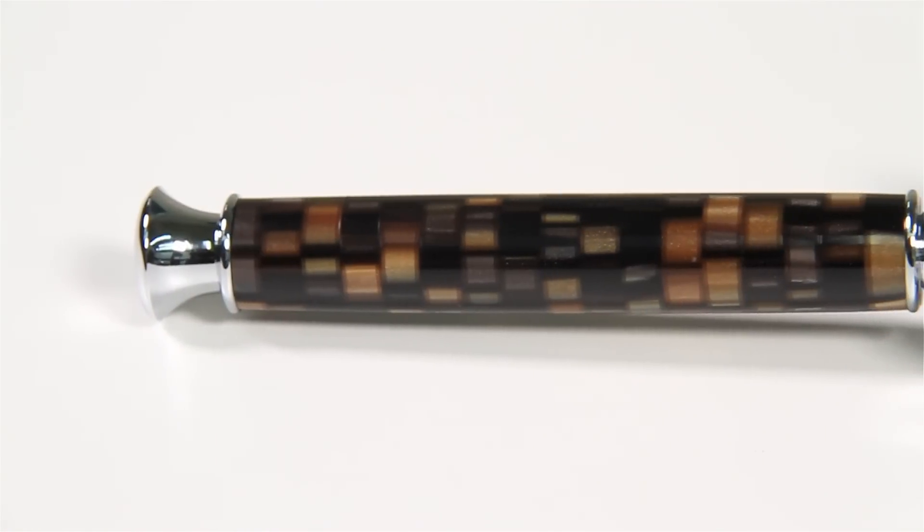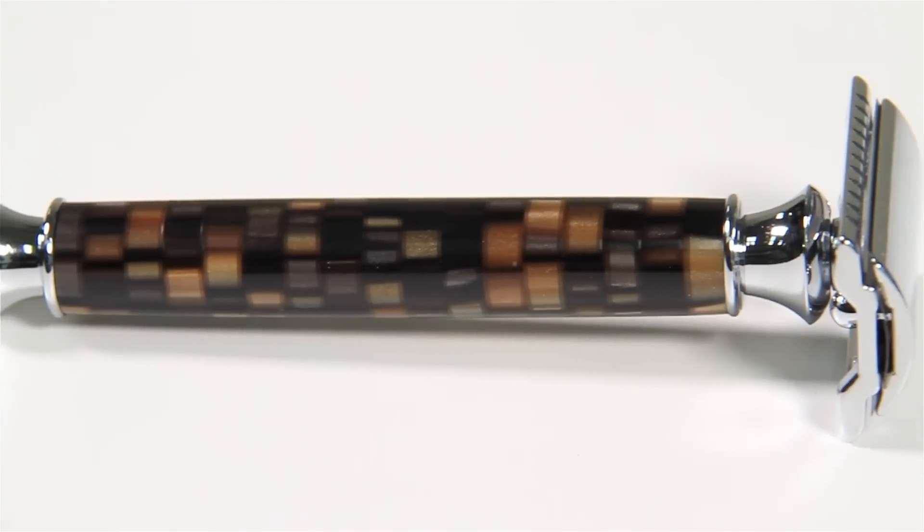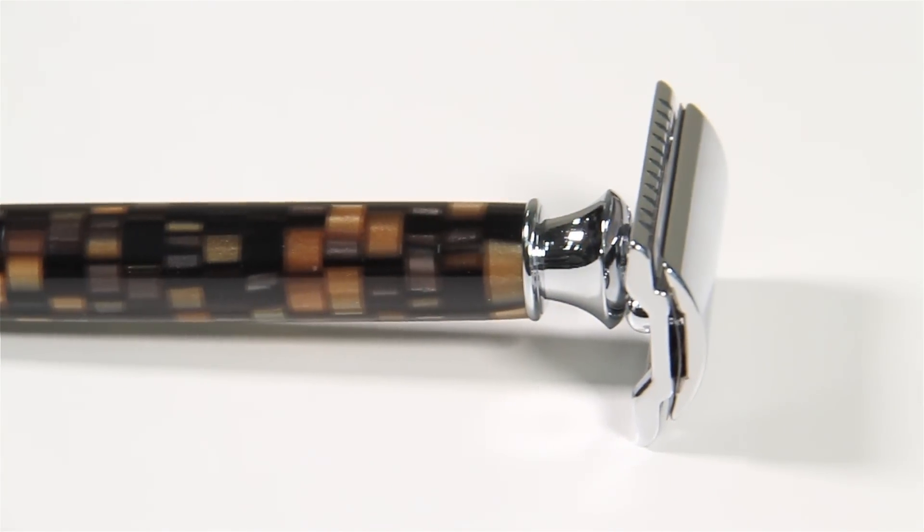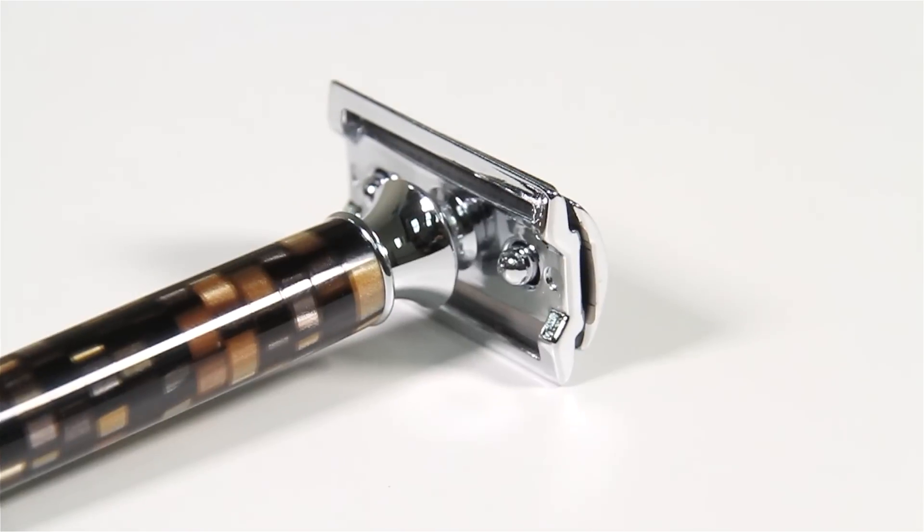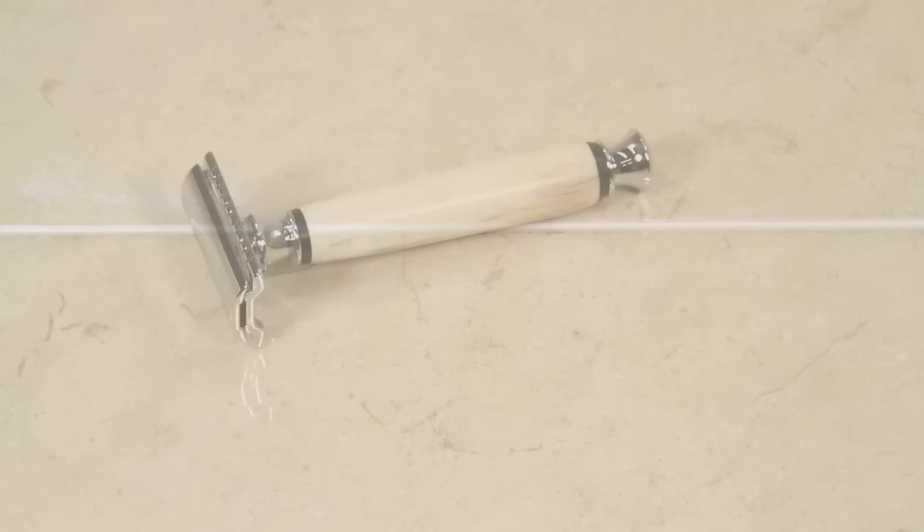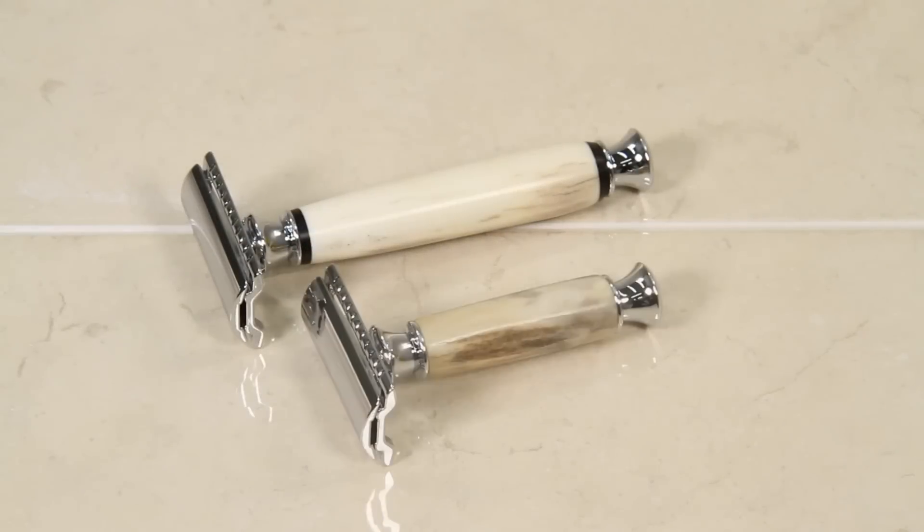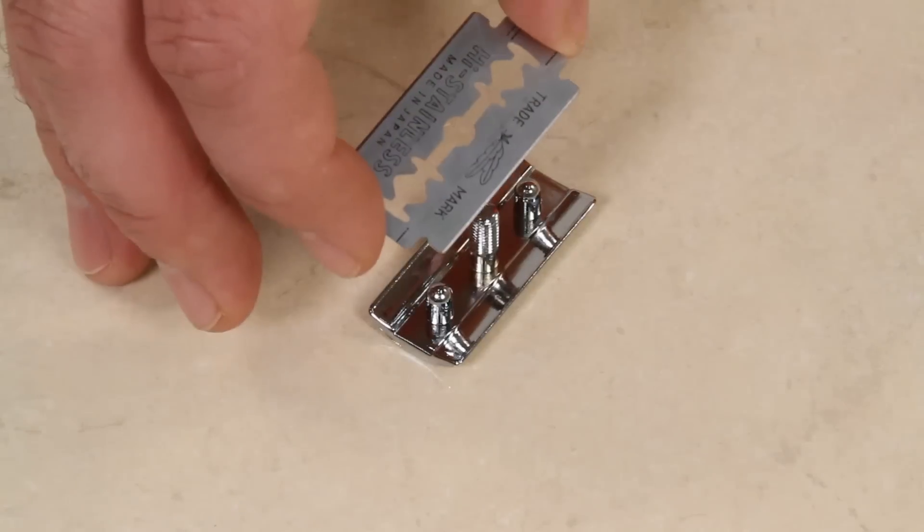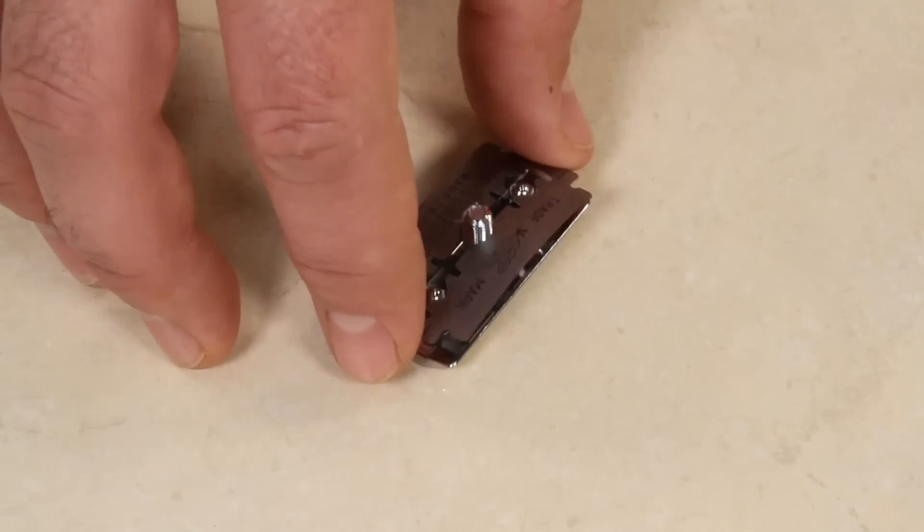The Artisan Safety Razor Kit features solid brass chrome plated components for a superb fit and finish. It also features a full-size handle that can be shortened if desired and accepts all standard double-edge shaving blades.